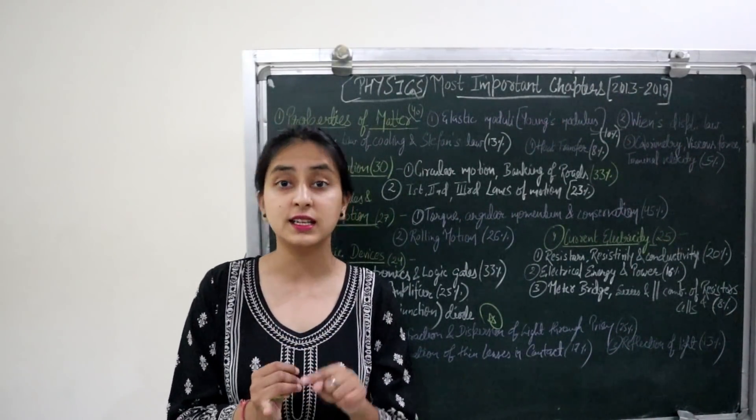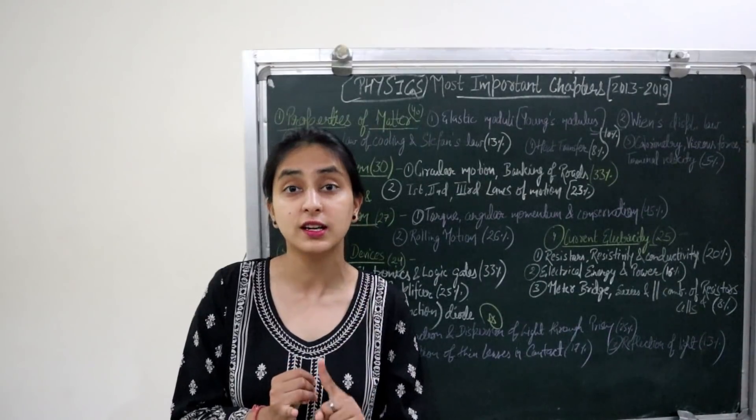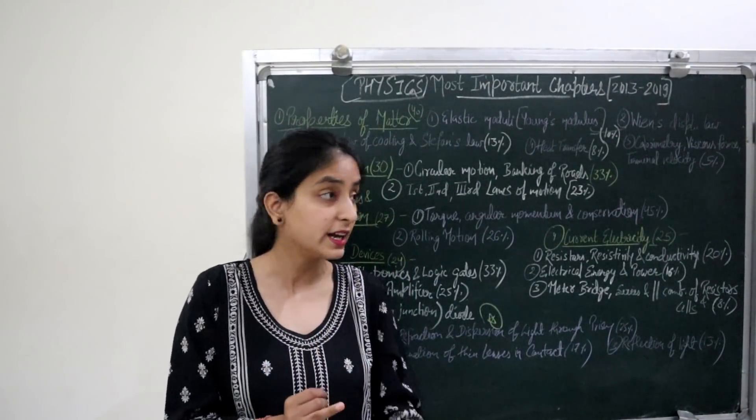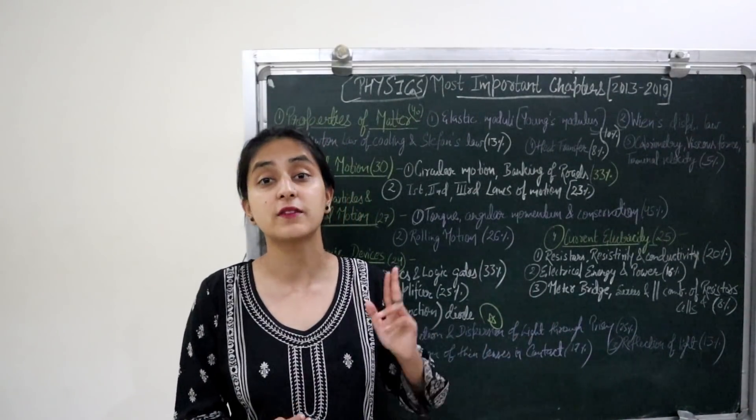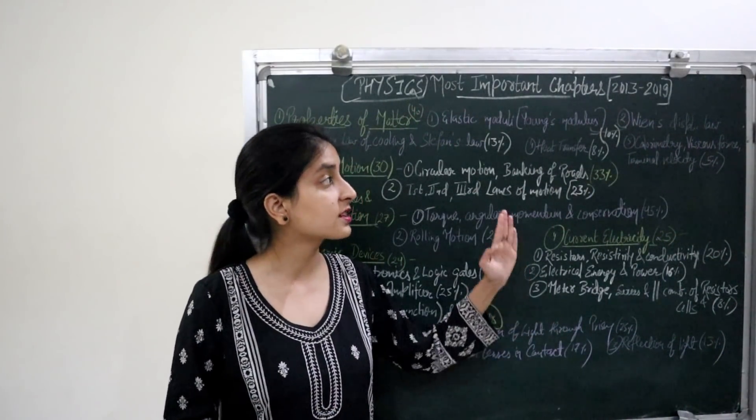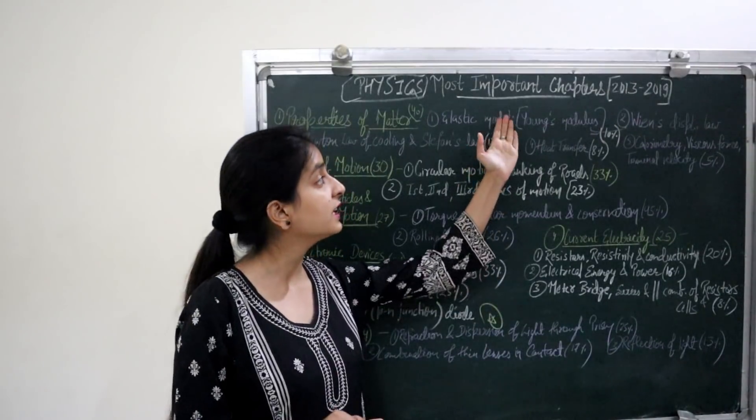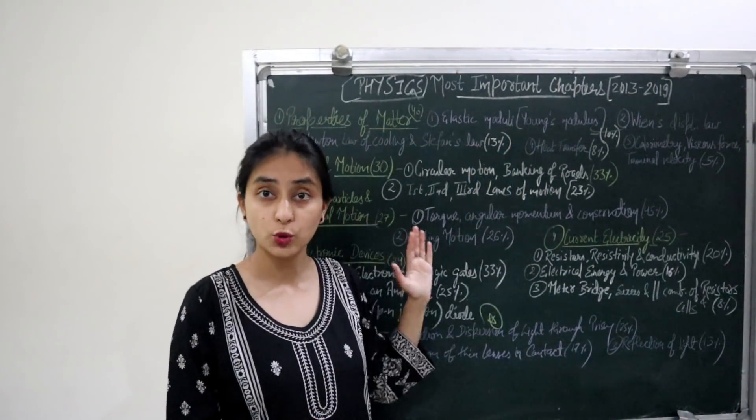So, start from easy chapters. Every chapter is complete. It is related to previous 5 years questions. You have to learn these 6 important chapters in detail. You have to learn the previous 5 years questions. You have to learn all the topics of these chapters.